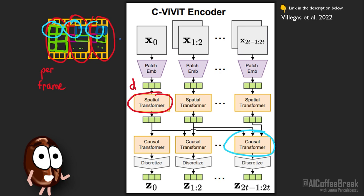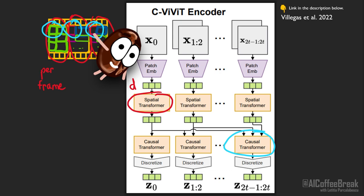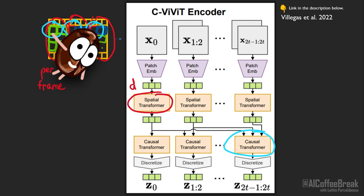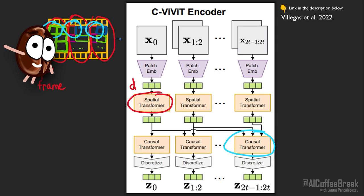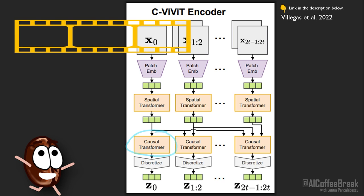Keep in mind that we are not allowed to look into the future — this is why the attention is causal here, meaning that we only look to past frames for each given patch at a certain frame T. Why is this causal attention important? Because it allows us to embed variable length videos, including videos of only one frame — so images.